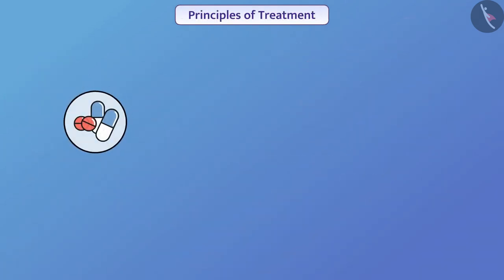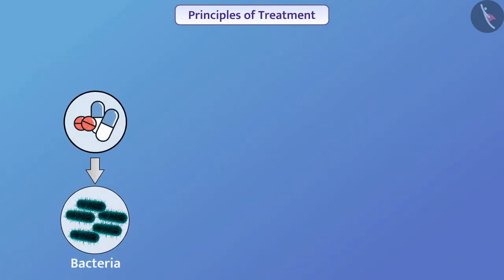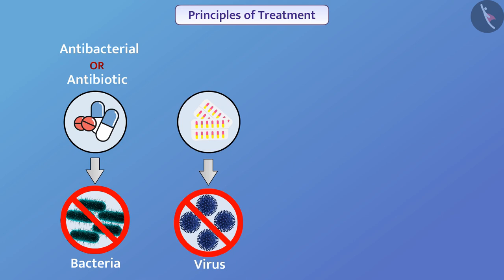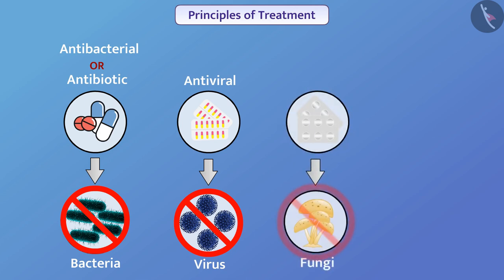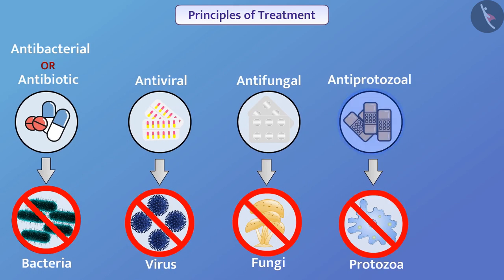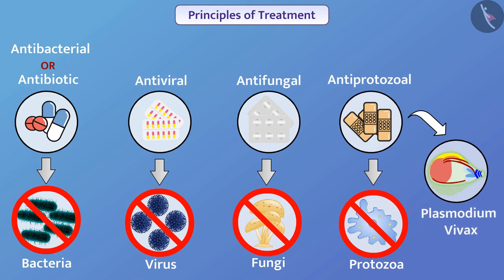A medicine that inhibits bacterial growth or kills microorganisms is called antibacterial or antibiotic. Similarly, a medicine that inhibits the growth of a virus or kills the virus is called antiviral. Antifungal medicines and medicines that inhibit the growth of protozoa or kill protozoa are called antiprotozoal. Antiprotozoal medicines kill the malarial parasite protozoa, plasmodium vivax.